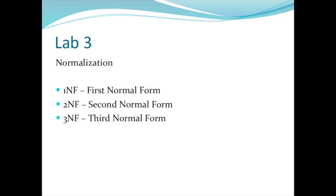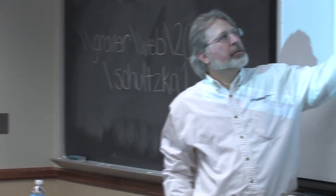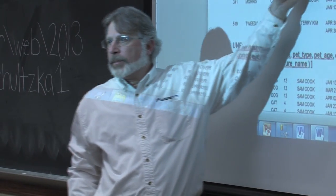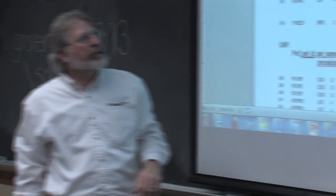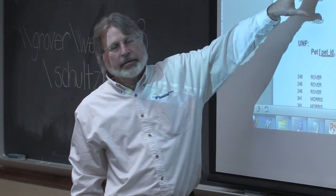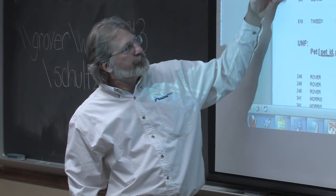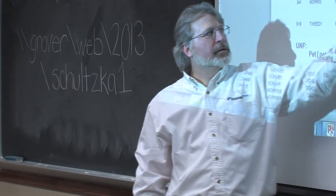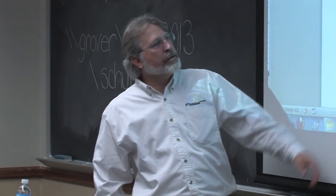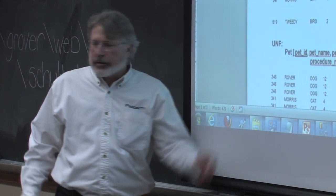So Bob's going to go through this. We have three labs with three exercises for this. Bob's going to go through the first one with you, and that's going to help you with the other two on your own. Basically, this lab here, we're just throwing out some data. We're going to use a pet and veterinarian health report to figure out our data model. So what we're looking at here is just some historical data of pets and owners and procedures.